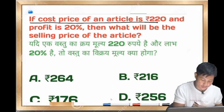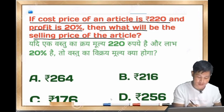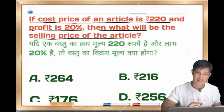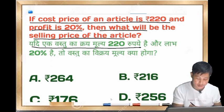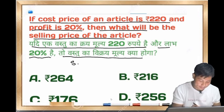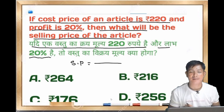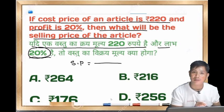If the cost price of an article is 200 rupees and the profit is 20%, then what will be the selling price of the article? Let me show you a shortcut method. Cost price is 200 rupees with 20% profit. We need to find the selling price.